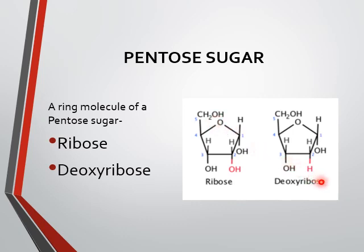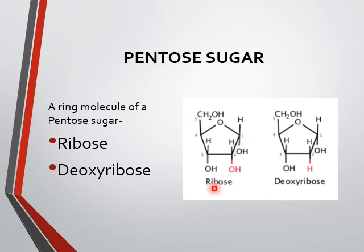Deoxyribose is again a pentose sugar, but you can see the difference at carbon number two. In ribose, carbon number two has H and OH, whereas in deoxyribose, carbon number two has only H and H — meaning one oxygen is less. The name 'deoxy' means one oxygen less than ribose. Both are pentose sugars made up of five carbons, but one oxygen is missing in deoxyribose, specifically at carbon number two.